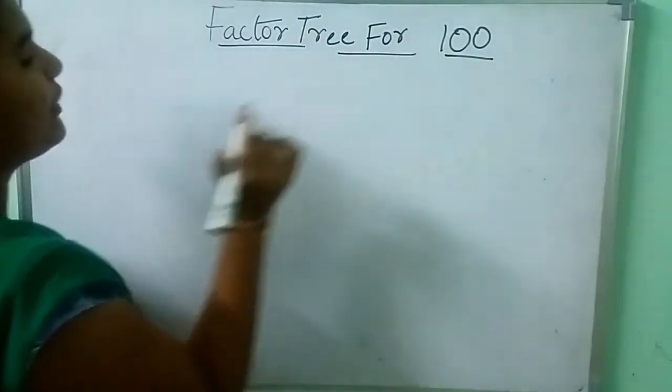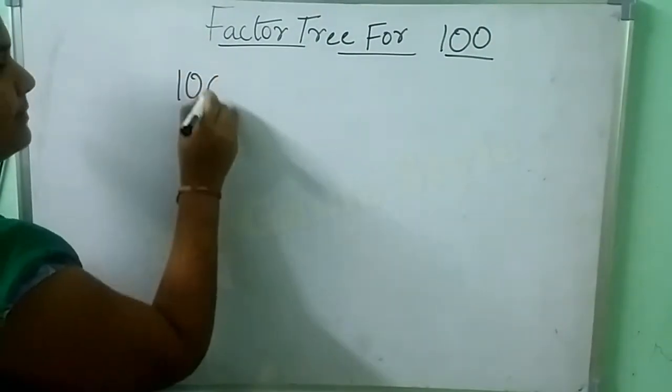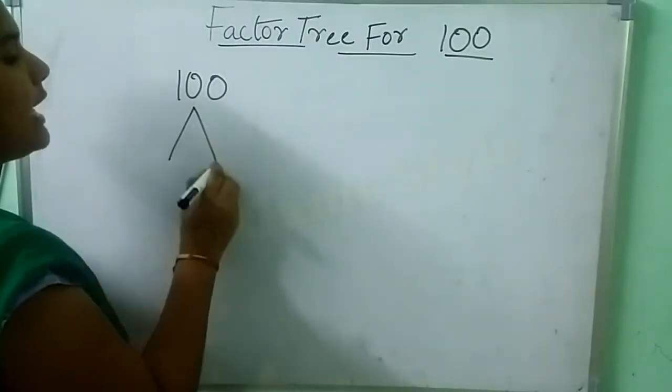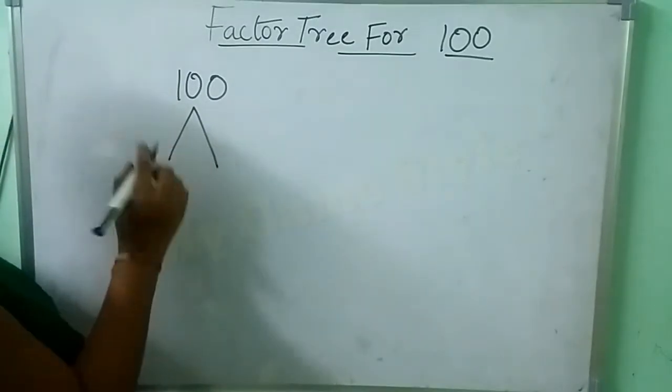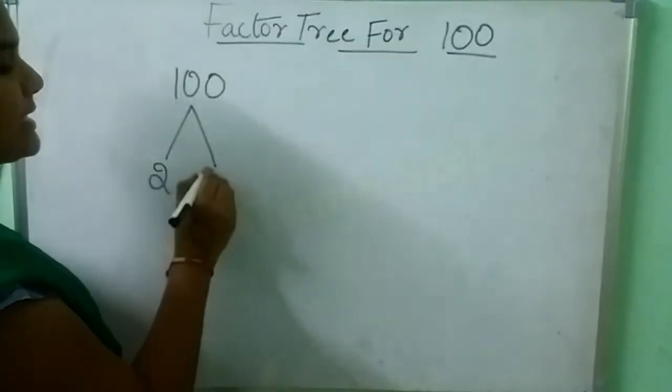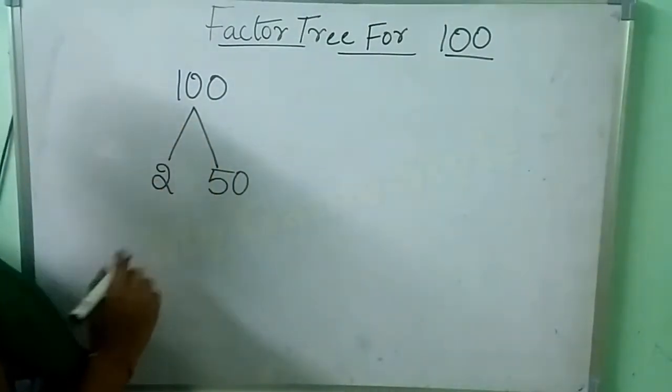Here 100 is there. First we need to write 100 here. Then in which table will 100 come? 2 times 50 is 100.